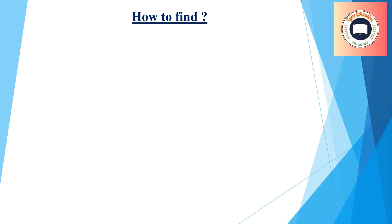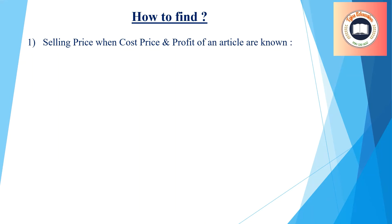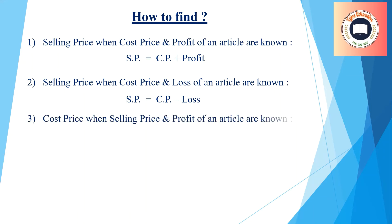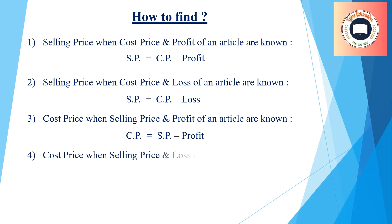How to find selling price when cost price and profit are known: SP = CP + Profit. How to find cost price when selling price and profit are known: CP = SP − Profit. How to find cost price when selling price and loss are known: CP = SP + Loss.